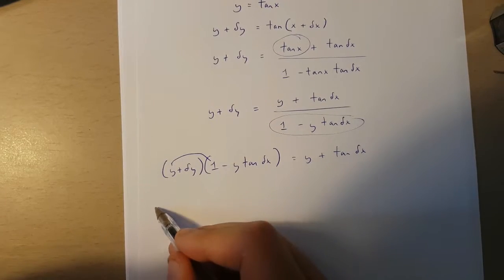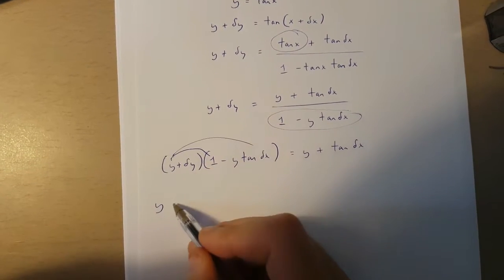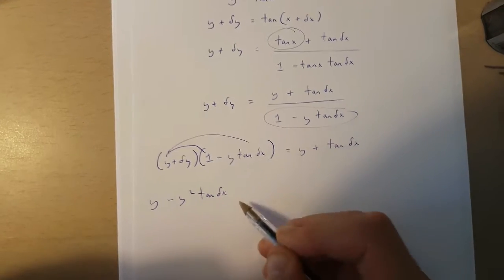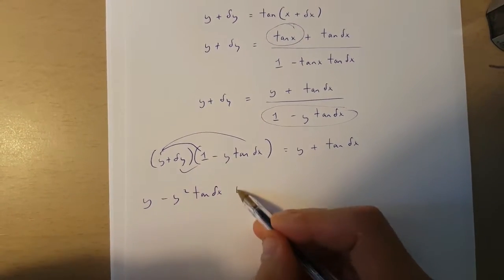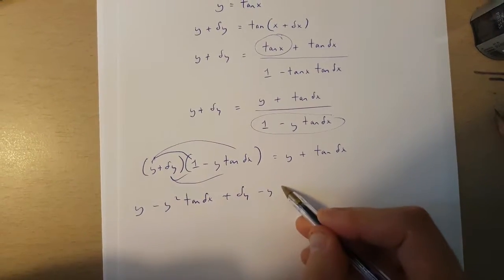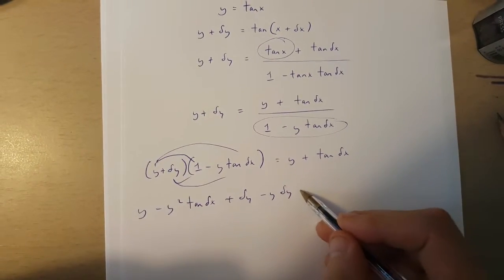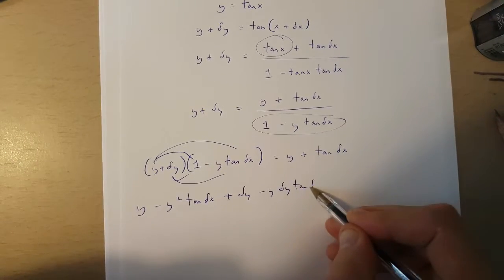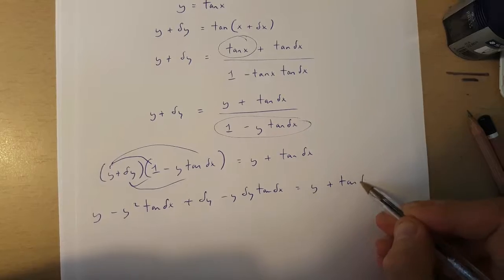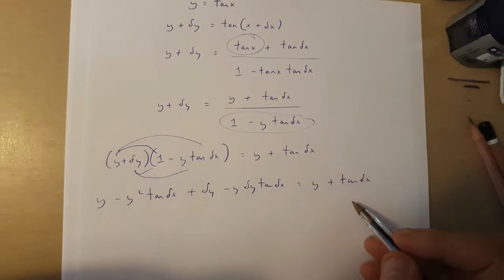And this is the same as y minus y squared tan change in x plus change in y minus y times change in y tan change in x is equal to y plus tan change in x.